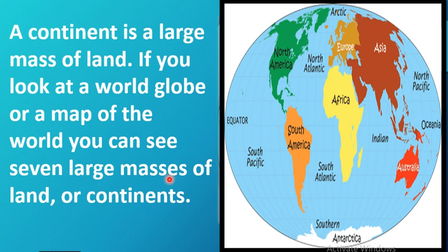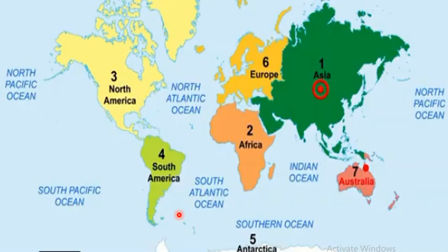What is a continent? A continent is a large mass of land. If you look at a world globe or a map of the world, you can see 7 large masses of land, or continents. The first one is Asia, then Africa, North America, South America, Antarctica, Europe, and Australia.